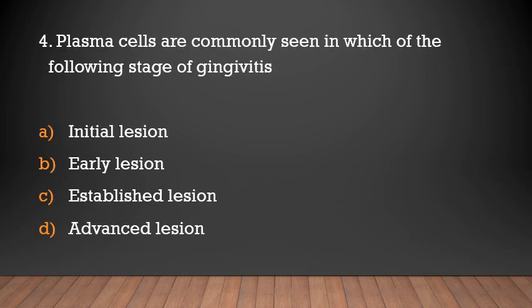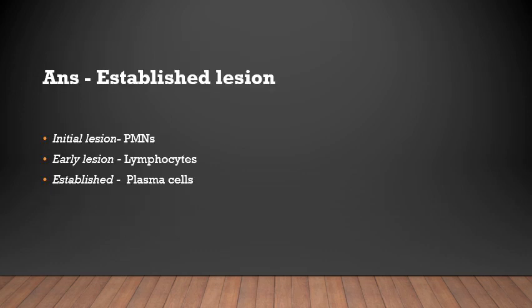Plasma cells are commonly seen in which stage of gingivitis? Initial lesion, early lesion, established lesion, or advanced lesion? The answer is established lesion. Cells commonly seen: initial lesion — polymorphonuclear leukocytes; early lesion — lymphocytes; established lesion — plasma cells.